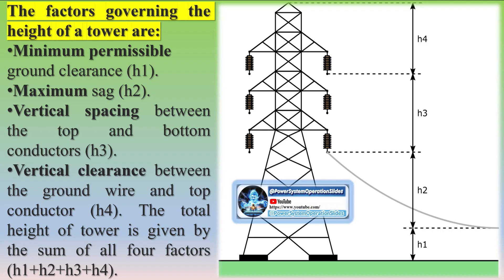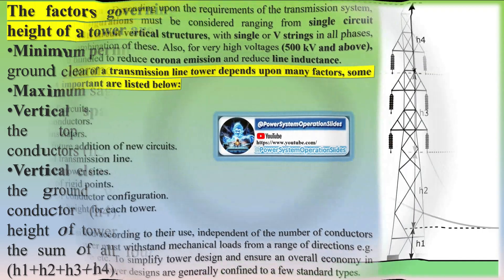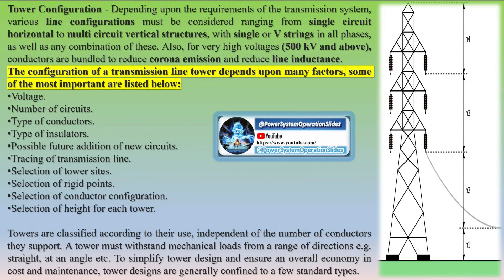Groups are installed in multiples of three — i.e., three, six, nine — and may be arranged in a triangular shape or parallel to each other. Three-way grouping increases transmission efficiency.